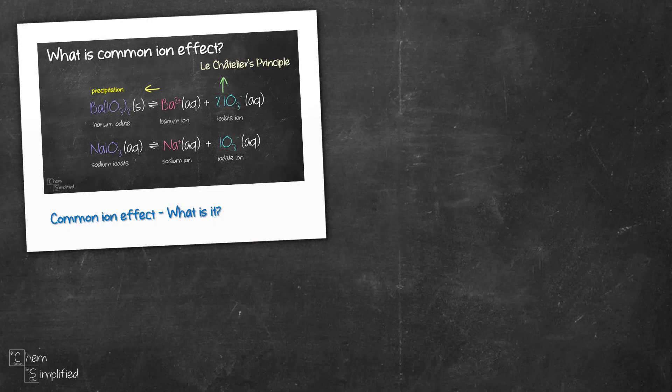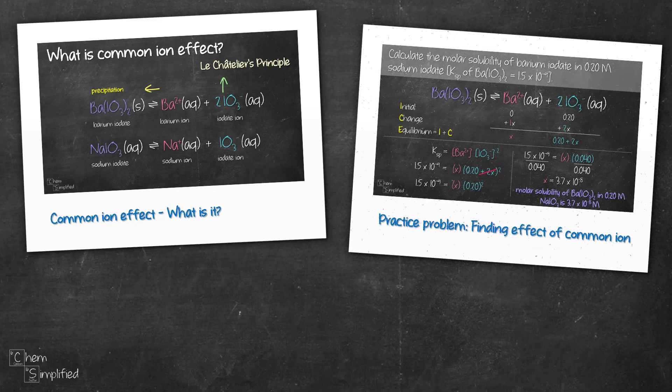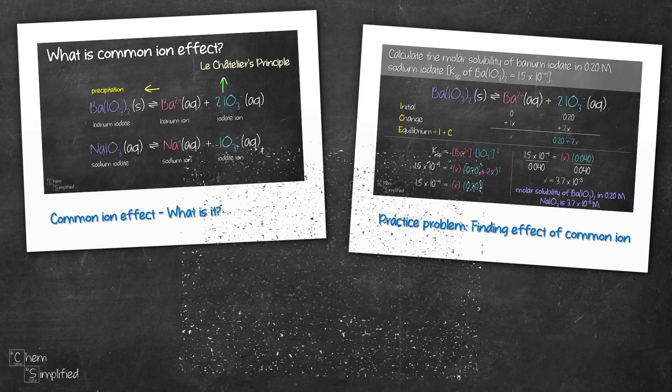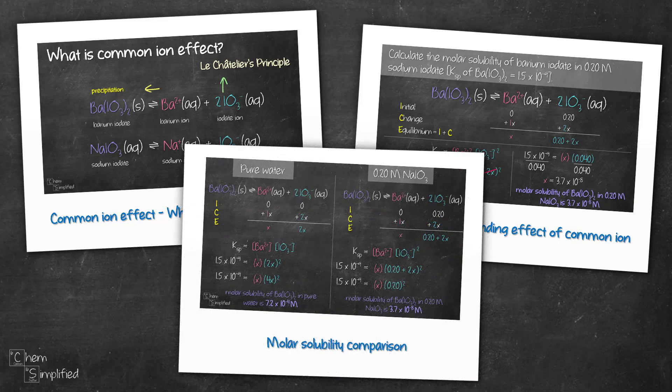In this video, we're going to look at the common ion effect on molar solubility. We will use a practice problem to demonstrate that the common ion effect will lower solubility, and we're going to do that by looking at a side-by-side comparison of molar solubility of barium iodate in pure water versus in 0.20 molar of sodium iodate.